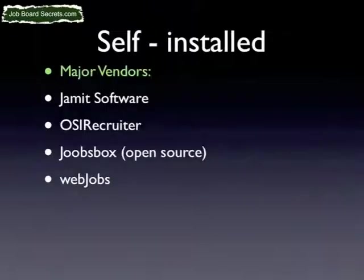The major vendors for self-install are Jamit software, OSI Recruiter, and Webjobs — all things you can download from the website after a purchase. Jamit is about $200 to download. JobsBox is a new open-source software that just came on the market. I took a quick look at it and it looks okay — I haven't really played with it yet, but it's definitely something you might want to check out since it is free.